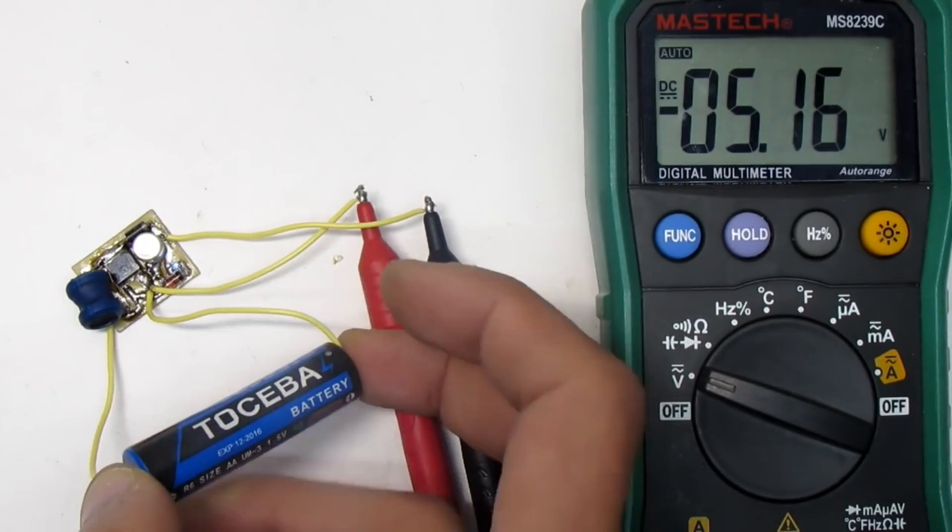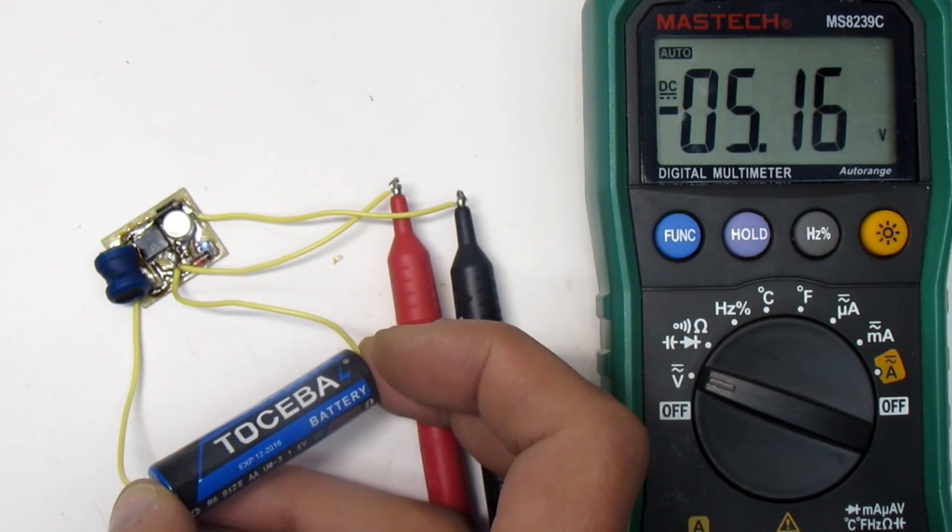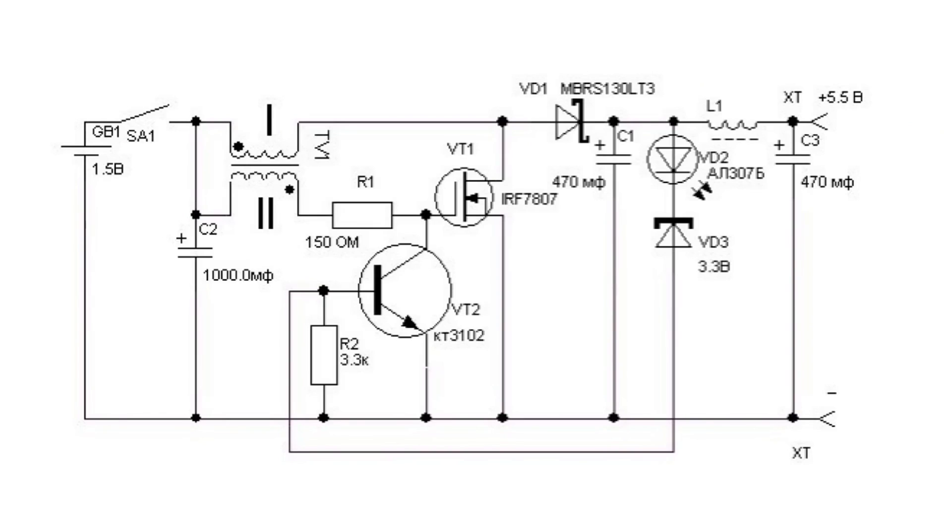Stabilization of the output voltage is performed simply and efficiently. If the output voltage exceeds the Zener voltage, it will open, and then will open low-power transistor VT2. Through the open collector emitter, the gate of field-effect transistor is short-circuited to ground, and it's closed until the output voltage drops below the desired level. Then the Zener closes again, and the FET continues to work. This process occurs 1000 times per second.